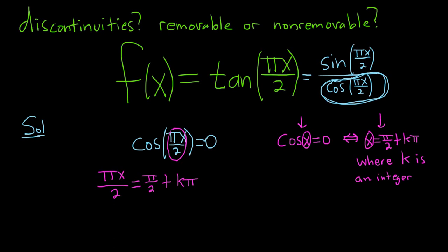Now all we have to do is solve for x. We have pi x over 2, so we can multiply by the reciprocal, which is 2 over pi. I'll put a parenthesis here. 2 over pi. These cancel.